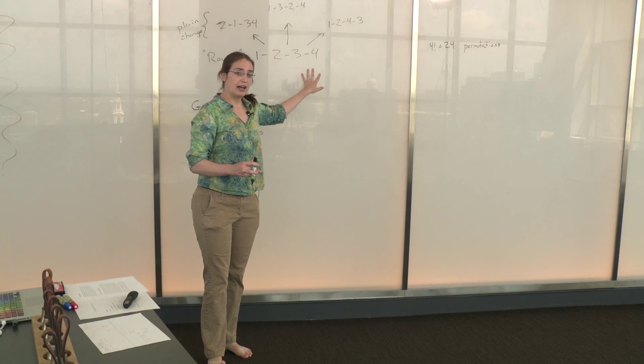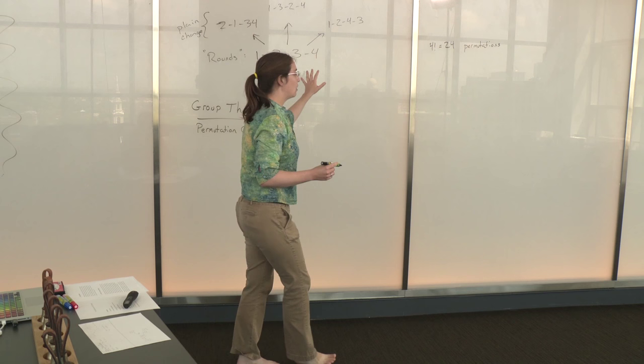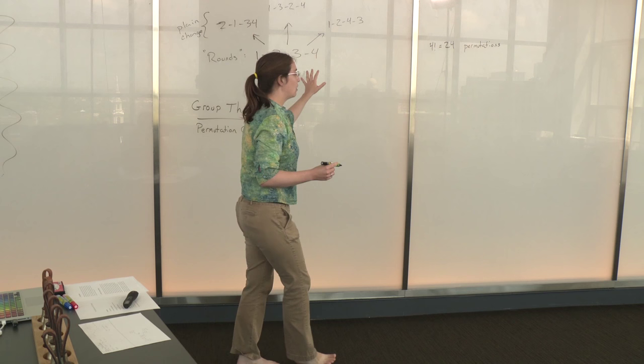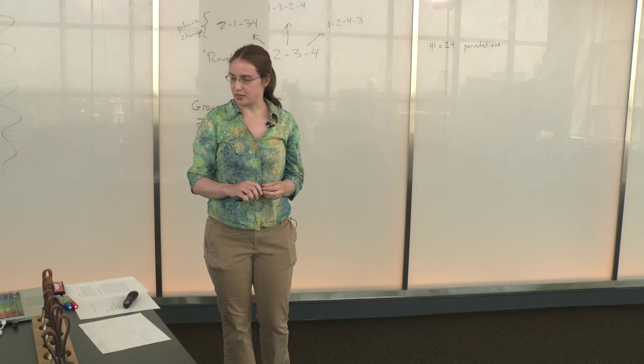The change ringers figured this out again back in the early 1600s. A particular algorithm was developed to allow you to get to all 24 permutations through a specific set of steps, a sequence of steps. The same algorithm was essentially written down and published by mathematicians in about the 1960s. It's referred to as the Steinhaus-Johnson-Trotter algorithm in mathematics. And you can see on the slides an example of how it works.